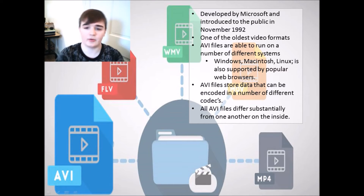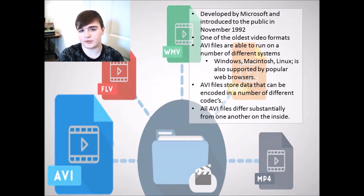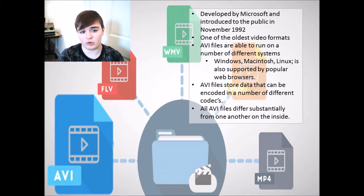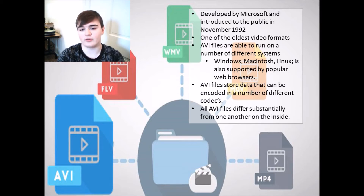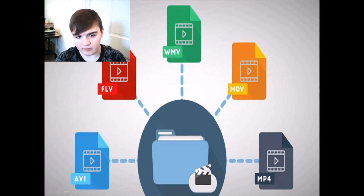AVI was developed by Microsoft and introduced to the public in November 1992. It is one of the oldest video formats. AVI files are able to run on a number of different systems, which are Windows, Macintosh, and Linux, and it is supported by popular web browsers. AVI files also store more data that can be encoded in a number of different codecs, and all AVI files differ substantially from one another on the inside.